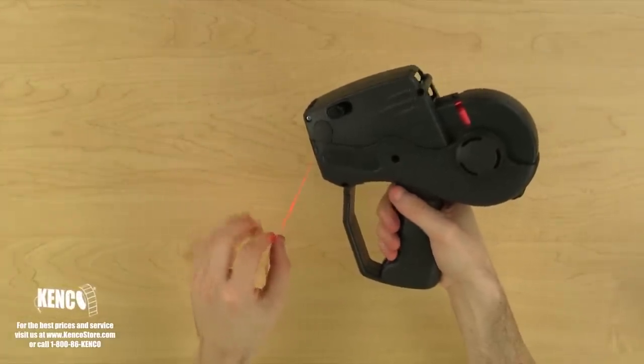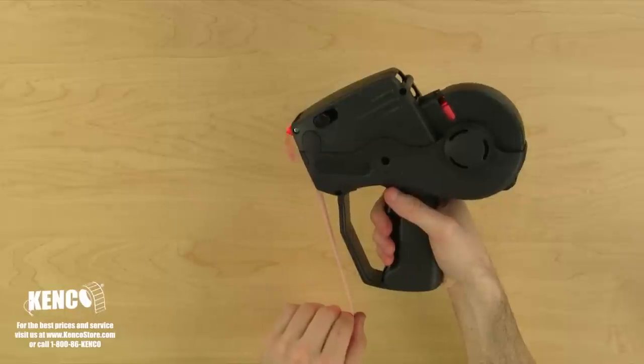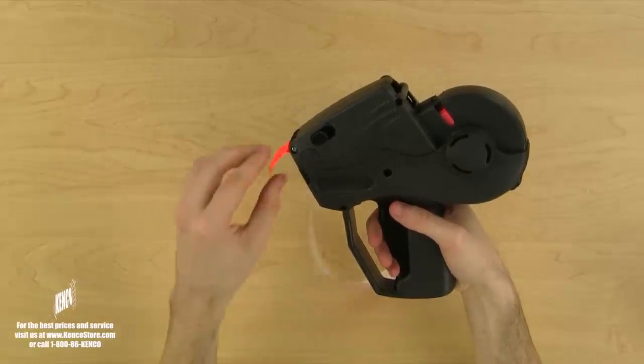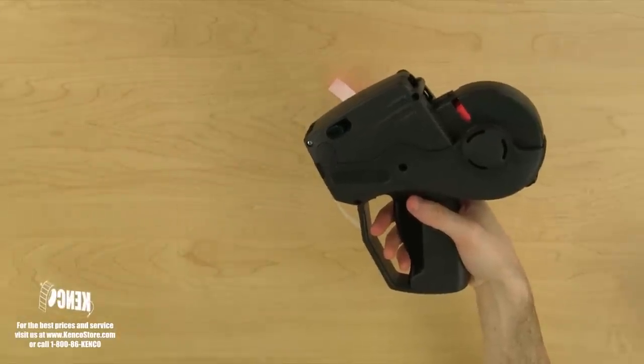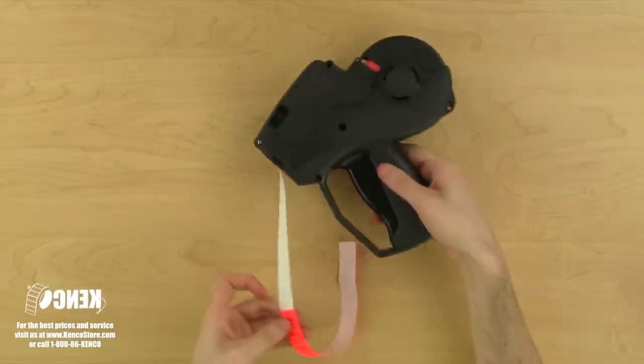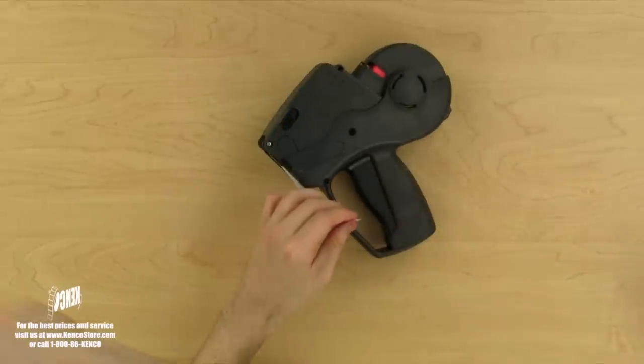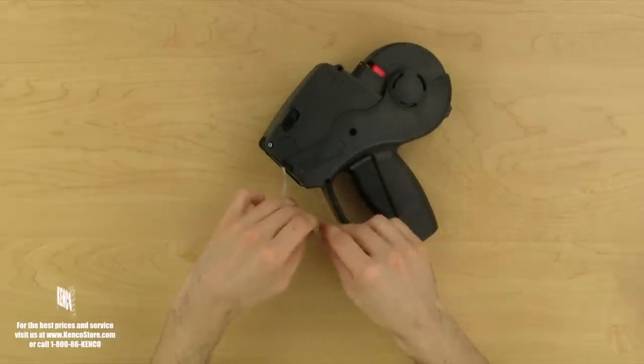Now we'll need to remove a few labels from the liner before we feed the label into the advancing mechanism. A quick and easy way to do this is to squeeze the trigger halfway and pull the label strip down until you've separated about five or six labels. Next, let's tear the label lining to remove the other labels so we have a nice clean start.